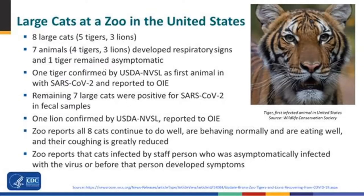To tell you a little more about the large cats: these were all at the same zoo in New York. Seven developed respiratory signs and one tiger was asymptomatic. The remaining seven cats were positive in fecal samples. An update is that all of them continue to do well — behaving normally, eating well, and their coughing has been greatly reduced. They believe the cats were infected by a staff person, or before that person developed symptoms. We think these animals are being infected by humans positive for COVID-19; we haven't seen evidence of animal-to-animal transmission.